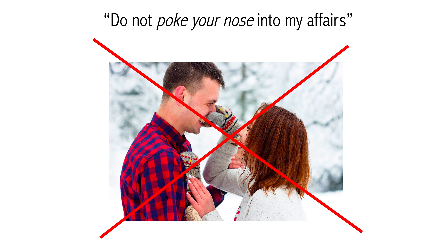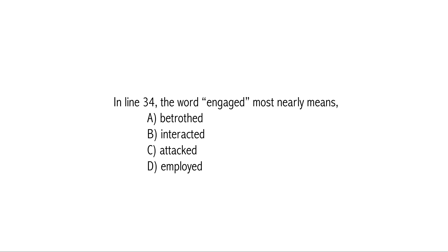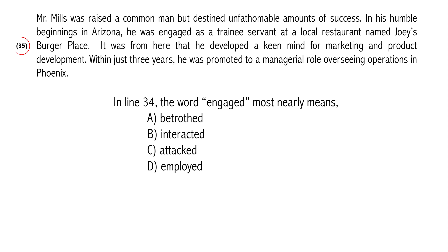Now let's look at what these questions tend to look like. They will say 'in line XYZ, the word engaged most nearly means.' You're going to look and identify the word they're asking you about, which is 'engaged.' Before you look at the options, you should always refer back to the context. You've located line 35, so we know line 34 is just above. It's a good idea to read at least the line before and the line after to get the complete context of the way in which the word is going to be used.